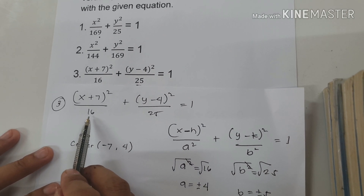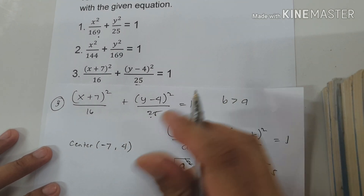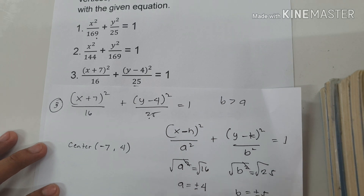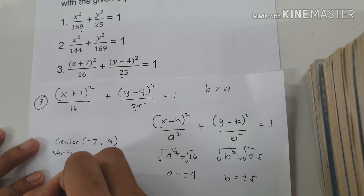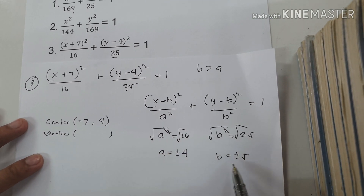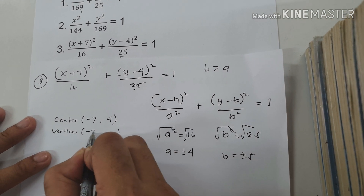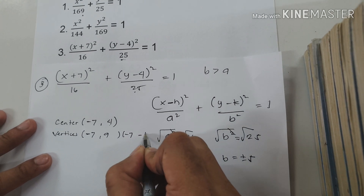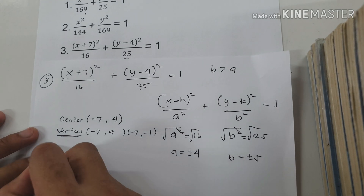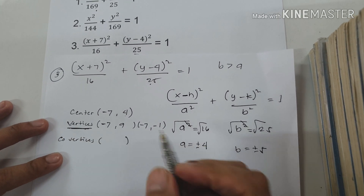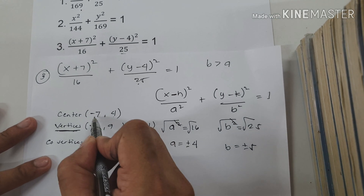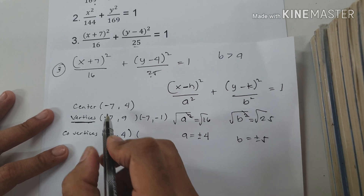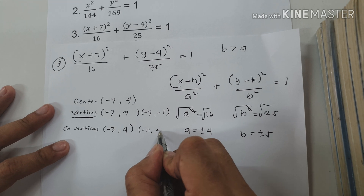The value of b is greater than the value of a, so the orientation is vertical. To find the vertices, we add the value of b to the value of k and write h. So: (negative 7, 4 plus 5) = (negative 7, 9), and (negative 7, 4 plus negative 5) = (negative 7, negative 1). For co-vertices, we add a to h: (negative 7 plus 4, 4) = (negative 3, 4) and (negative 7 minus 4, 4) = (negative 11, 4).